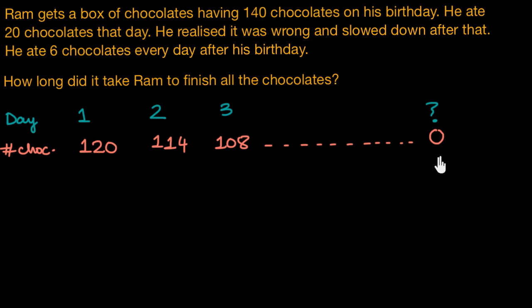So the thing that stands out in these numbers is that there is a pattern in the way Ram eats his chocolates. What I mean is, every other day, Ram has 6 chocolates less than the previous day. So what we can say about this pattern is that every next term is attained by subtracting 6 from the previous term.